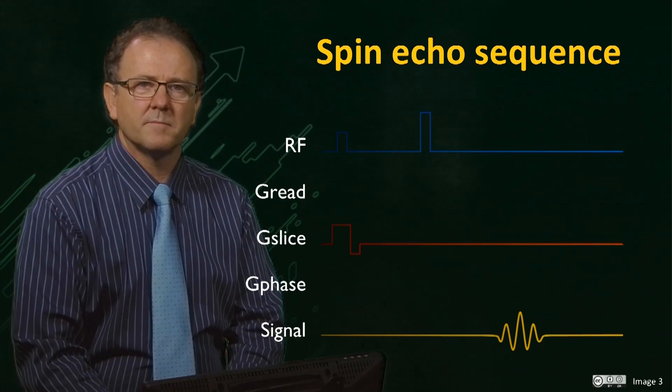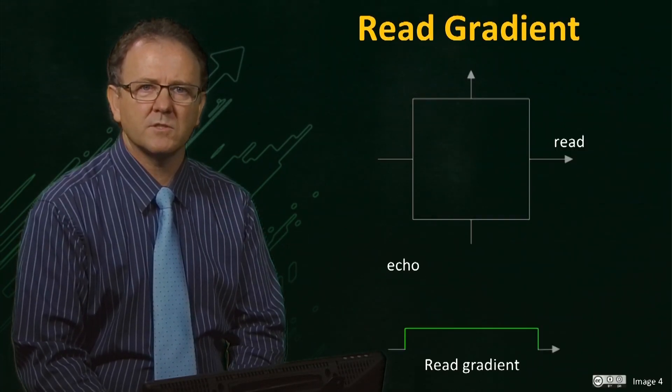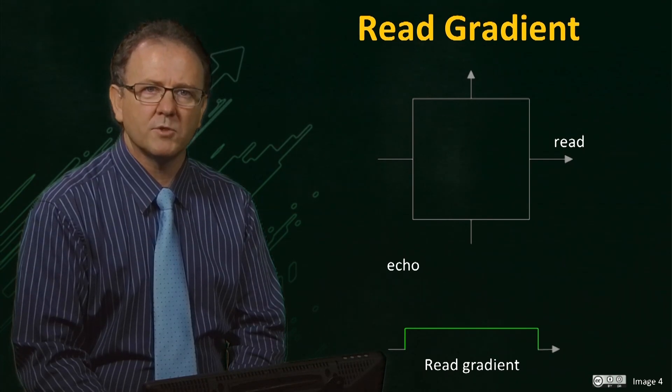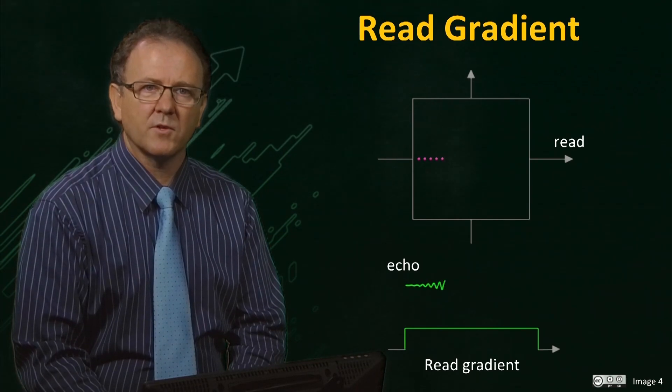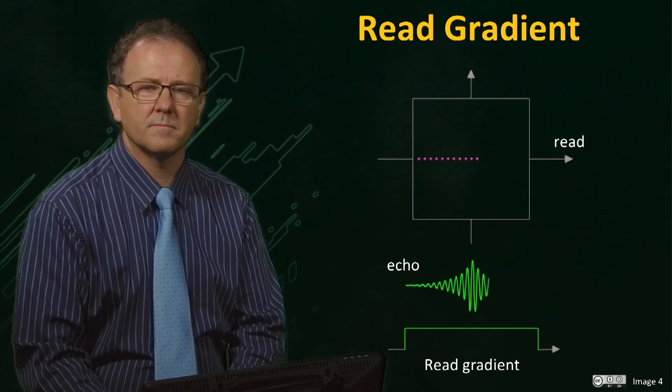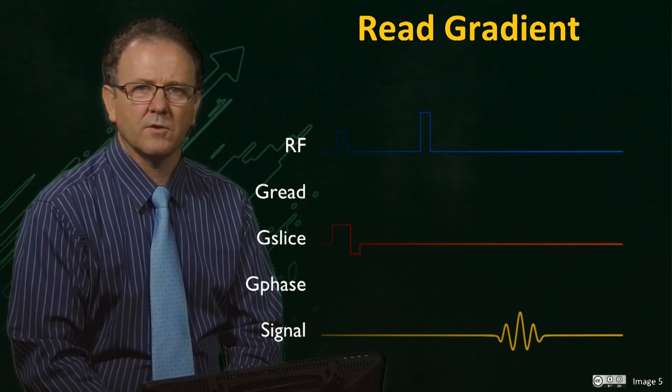Now we consider the read gradient. As we have seen, the read gradient encodes the slice echo to form a projection of the slice along the read direction. The echo is acquired after the gradient is turned on. Here is the sequence now with the slice and read gradient turned on.